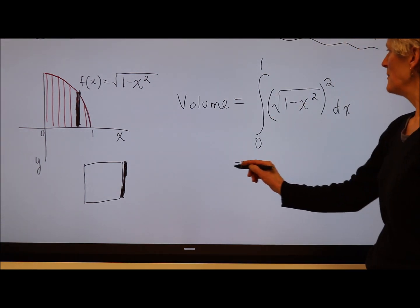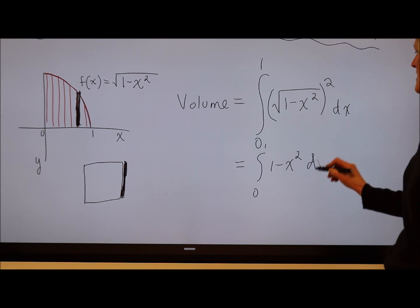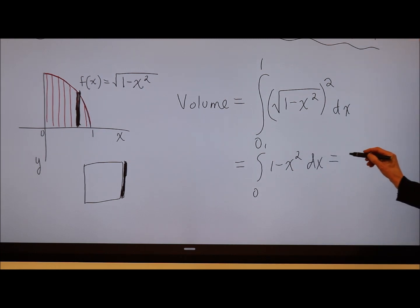All right. So here I go. I'm going to first square this because that seems to be the easiest. 1 minus x squared dx. Take the antiderivative of each piece. So I have x minus 1 third x cubed from 0 to 1.